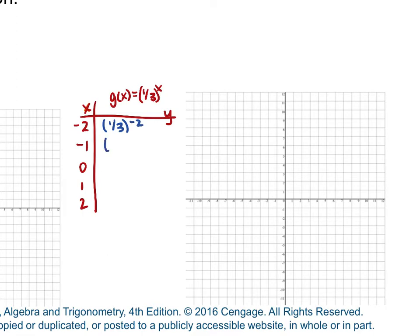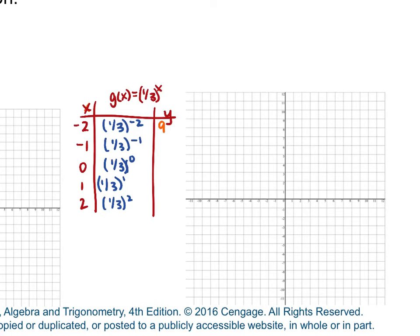So we're going to evaluate: 1 third to the power of negative 2, 1 third to the power of negative 1, 1 third to the power of 0, 1 third to the first power, and 1 third to the second power. For 1 third to the power of negative 2, take the reciprocal — it gives you 3 to the second power, which is 9. For 1 third to the negative 1, take the reciprocal — that's 3 to the first power, which is 3. Then 1 third to the power of 0 is just 1, because anything to the power of 0 is 1. 1 third to the first power is 1 third, and 1 third to the second power is 1 ninth.